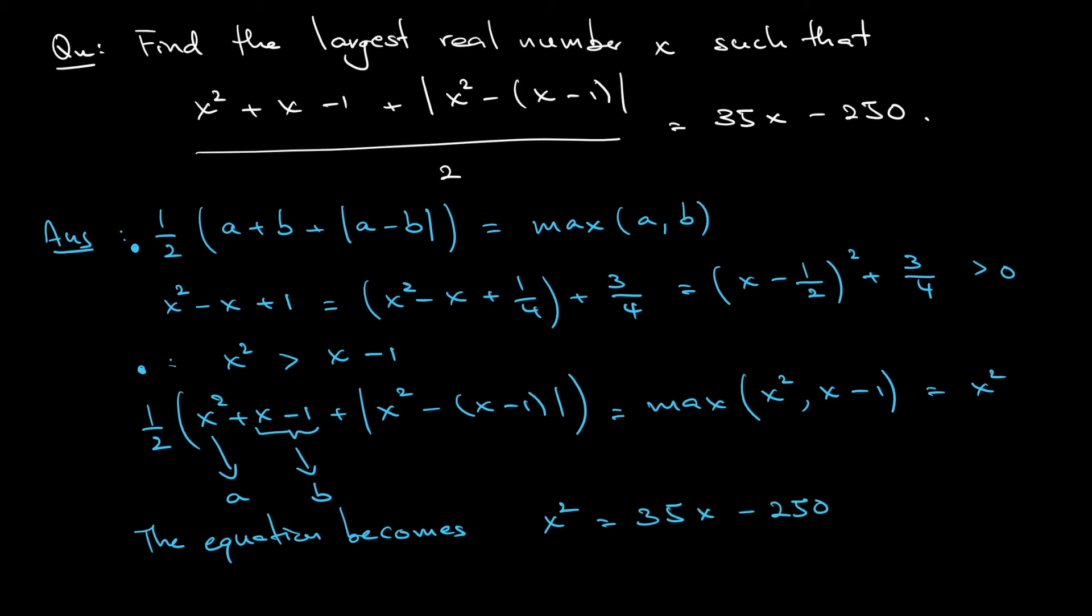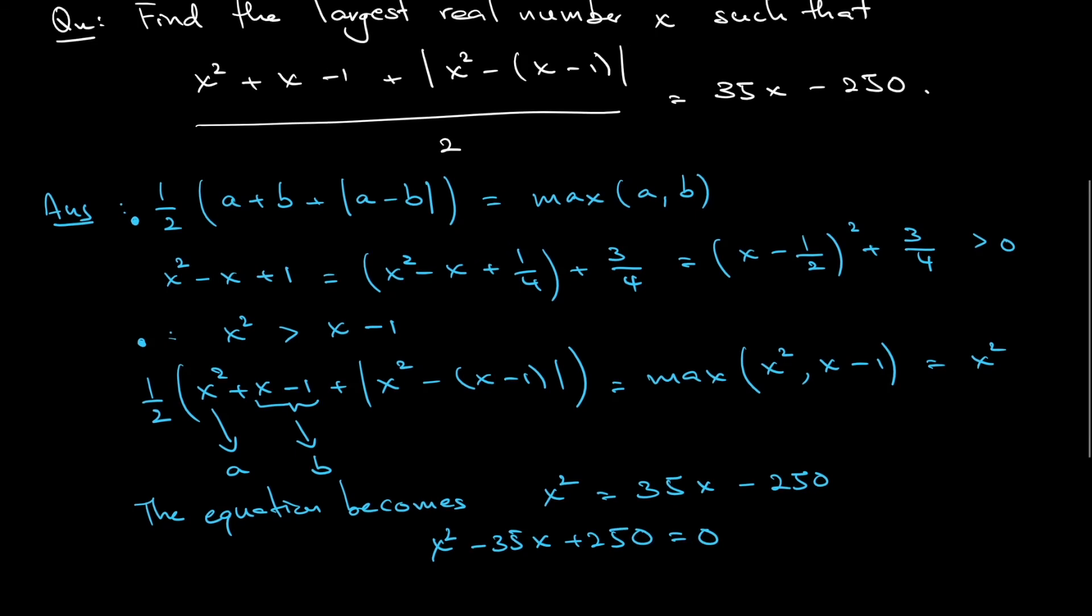Shift everything to the left-hand side: x squared minus 35x plus 250. This quadratic equation, you can factorize this, you will get x minus 25 times x minus 10 is equal to 0. That means the value of x is either 10 or 25.